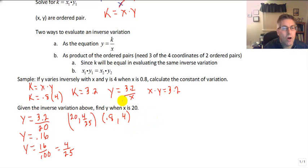We could also do this as a product of the two. I think in my notes here I see I've got two ordered pairs. I've got the ordered pair 0.8 comma 4 and the other ordered pair is 20 comma something. Why?